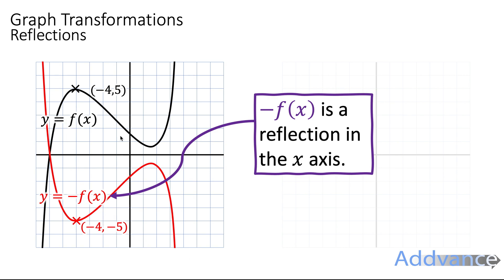And look at the y coordinate, it was five, now the y coordinate is minus five. And so you just swap the sign of the y coordinate and you reflect the entire curve in the x axis. So minus f of x is a reflection in the x axis.